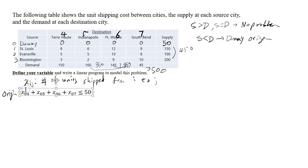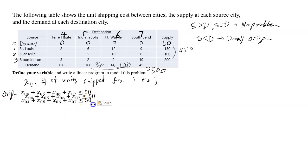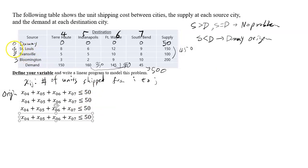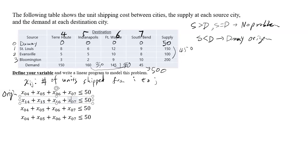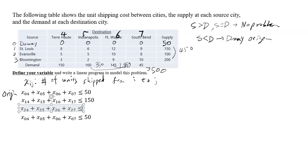Now I'm going to copy this and just change the subscripts. For St. Louis, it's X14 + X15 + X16 + X17, and St. Louis can at most give 150 supply. The next one is Evansville: X24 + X25 + X26 + X27, and it can supply up to 100.